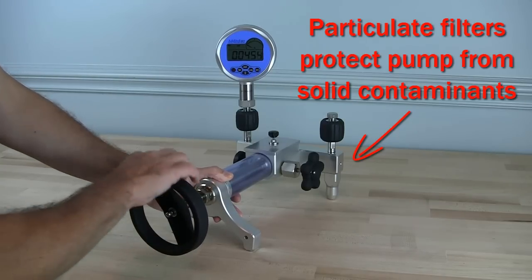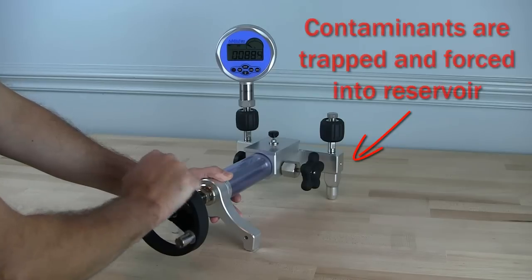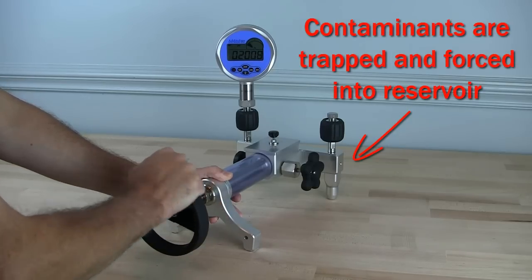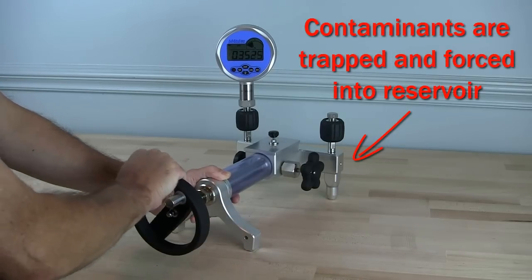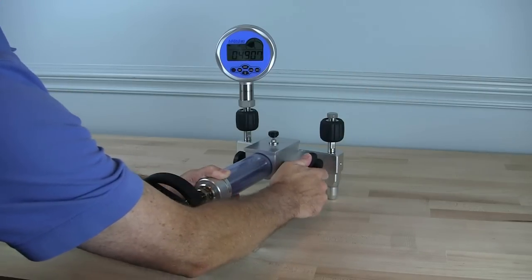To set a test pressure, close the reservoir isolation valve and use the patented screw press to pre-pressurize the system. Set your final test pressure using the fine control valve.